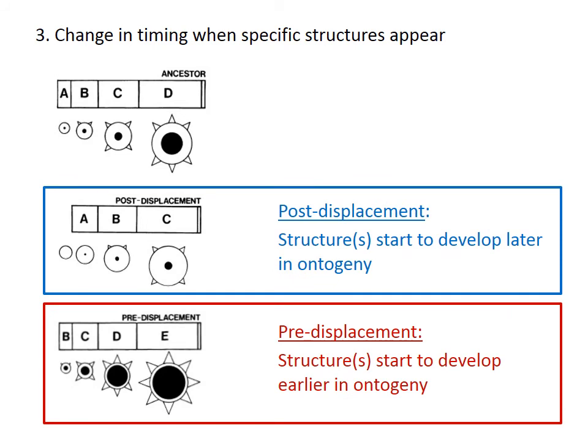Finally, development can be changed not by altering the rate or duration, but simply by changing the timing at which specific morphological structures appear. In the ancestor, the letters represent stages defined by morphology, and horizontal distance is time. In the blue box, stage A — defined by the first appearance of the central dot — occurs later in time, producing an even more juvenile early stage. This is called post-displacement, resulting in the adult resembling the juvenile of the ancestor — pedomorphosis. In the red box, structures begin to develop even earlier in the lifespan, starting at stage B already possessing the top spines. This is called pre-displacement, a type of peramorphosis.